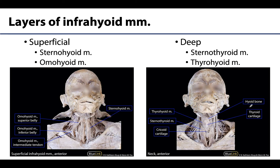As mentioned, there are two layers or planes of muscles. The superficial layer is composed of the sternohyoid as well as the omohyoid, which is a personal favorite because it's so unique. The deep layer is made up of the sternothyroid and the thyrohyoid. If you have 'thyro' or 'thyroid' in the name, you know you're talking about the deep layer.